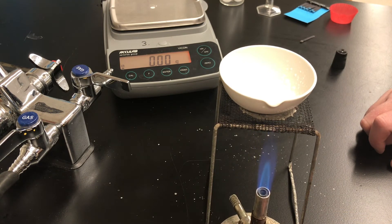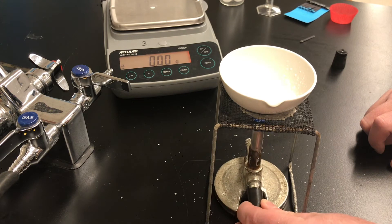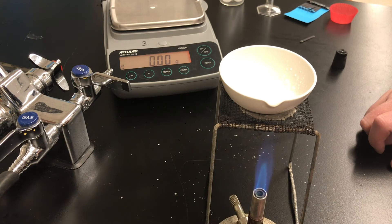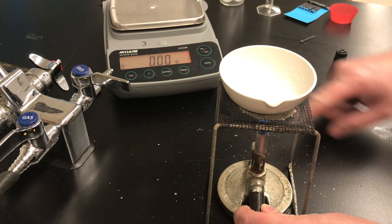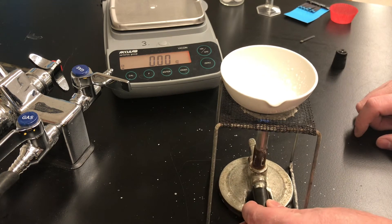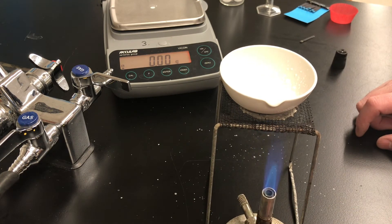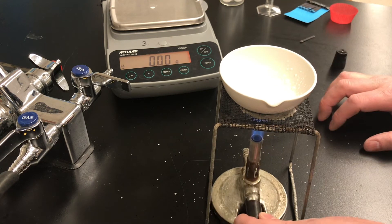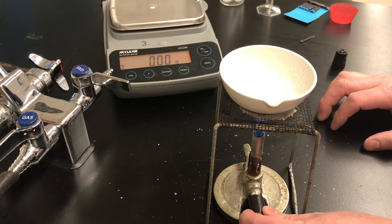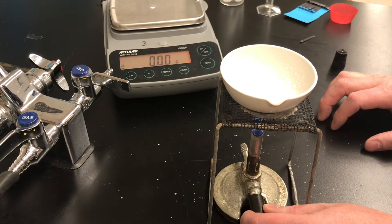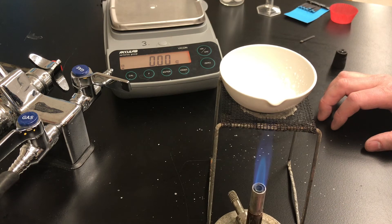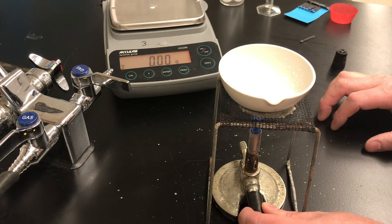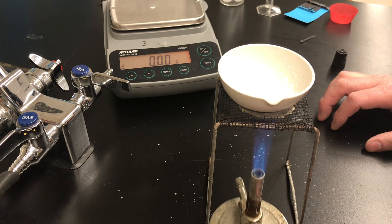I'm pulling the burner out, putting it back under and the salt inside the dish is getting pretty dry. There's some salt that spit out so that's going to be a source of error you want to make a note of. Some people because they are afraid of losing salt to that spitting will stop heating too early. If you stop heating too early then what's left in the dish is not just salt. If you don't heat long enough then you'll still have water left in the evaporating dish and that would be another source of error.